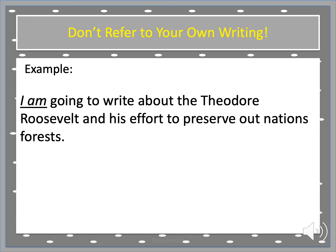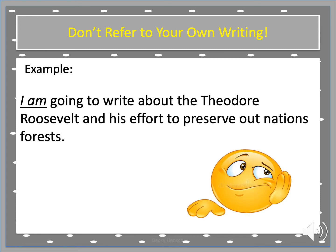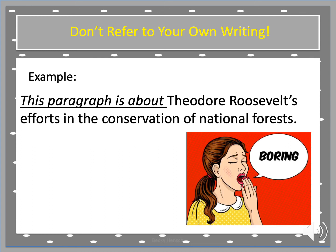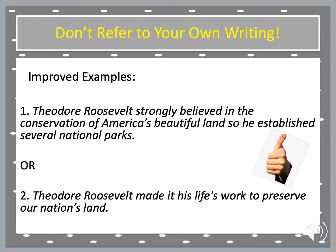An example of referring to your own writing: 'I am going to write about Theodore Roosevelt and his effort to preserve our nation's forests.' Well, that's boring and it's broad. Another example: 'This paragraph is about Theodore Roosevelt's efforts in the conservation of national forests.' You've just told me what you're writing about — please don't do that. It's so general. Improved examples: 'Theodore Roosevelt strongly believed in the conservation of America's beautiful land, so he established several national parks.' Or: 'Theodore Roosevelt made it his life's work to preserve our nation's land.' Much more interesting and specific.